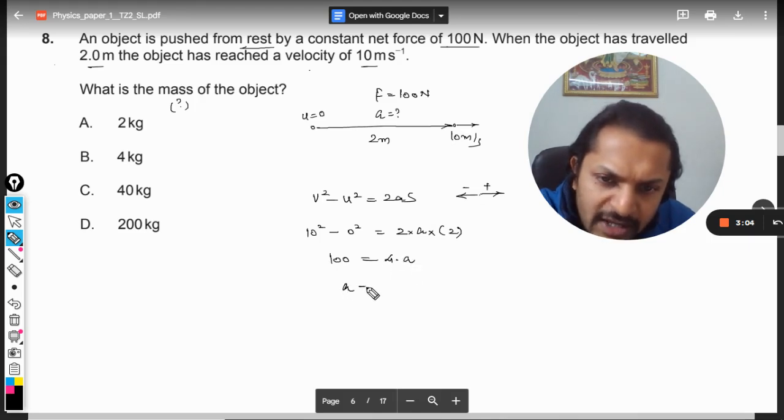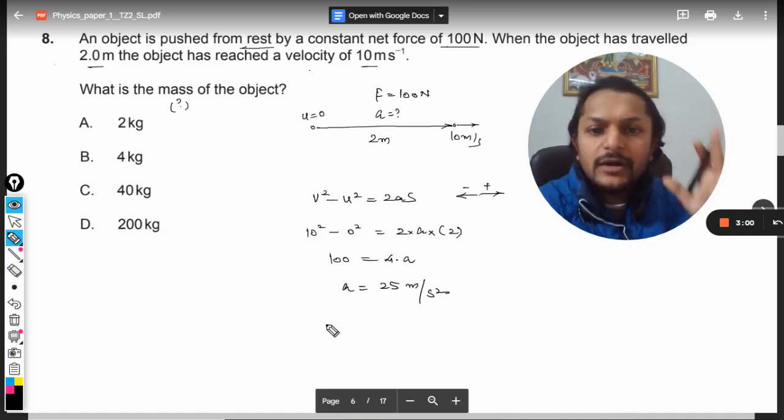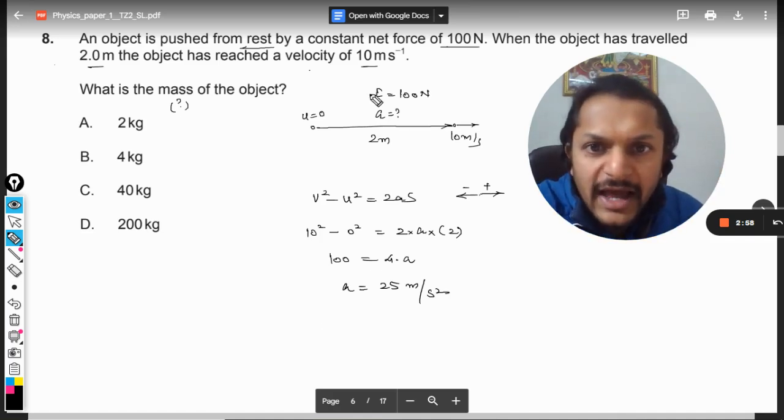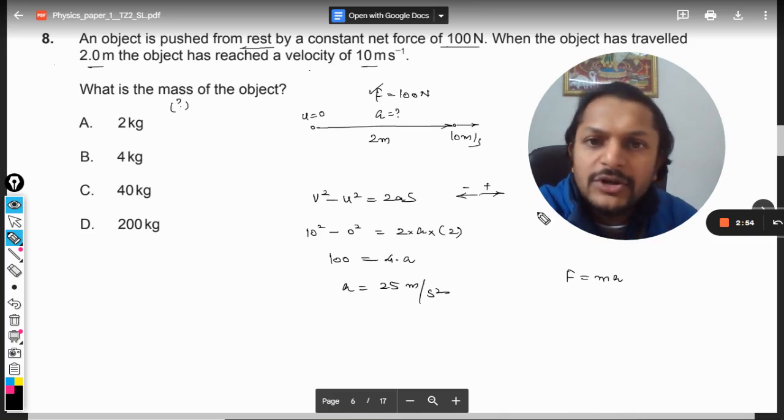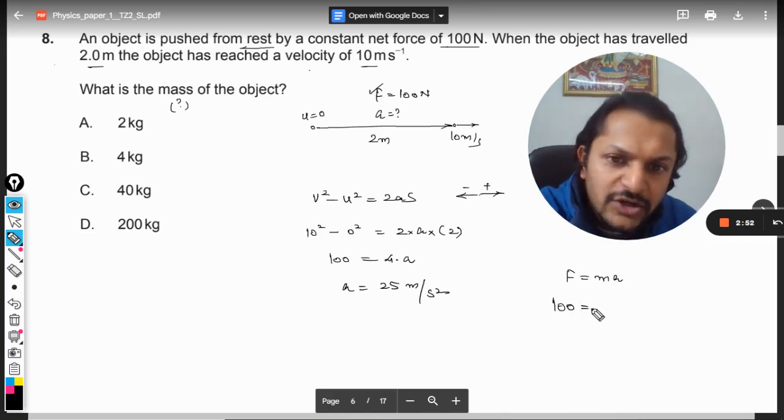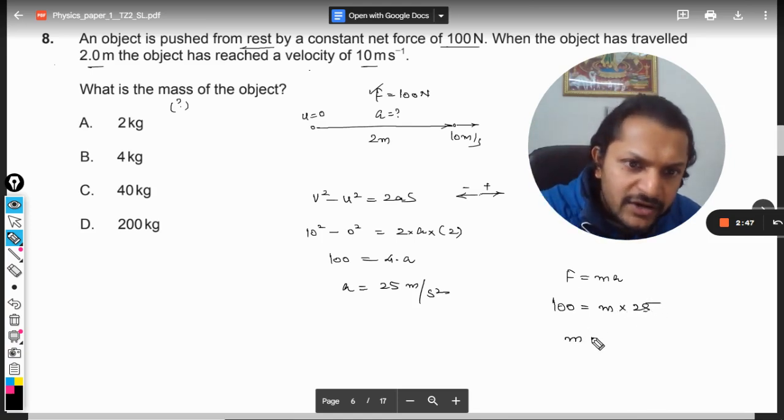So acceleration is 25 meters per second squared. Now that's the acceleration and F is also known. So F = ma. Force is 100 Newton, mass we want to find, and acceleration is 25.